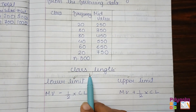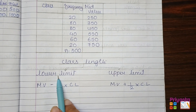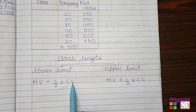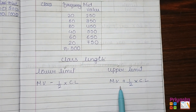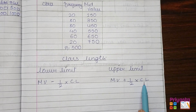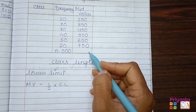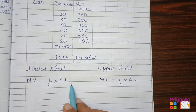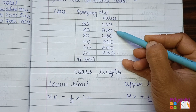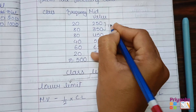To find out the class, here is the formula for class length. For finding the lower limit, we take mid value minus half of the class length. To find the upper limit, we take mid value plus half of the class length. The class length can be found from the distance between 250 and 350, which is obviously 100.